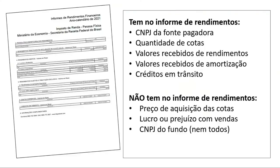O que não tem no informe de rendimento: o preço de compra das cotas — o valor que você pagou pelos fundos imobiliários, isso você tem que ter em um controle próprio. Lucro ou prejuízo com vendas vem do seu próprio controle. E o CNPJ do fundo imobiliário em si, nem todos os informes trazem essa informação. Se você não sabe o preço que pagou ou o preço que vendeu, você vai procurar essa informação nas notas de corretagem. Vai lá pela corretora, entra no sistema e baixa todas as notas de corretagem do ano passado.